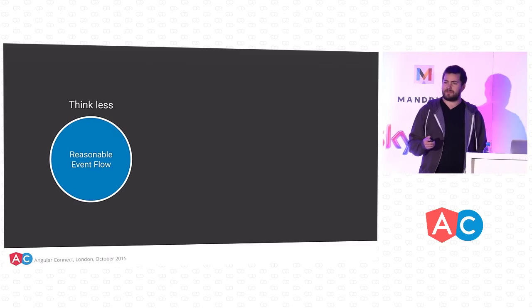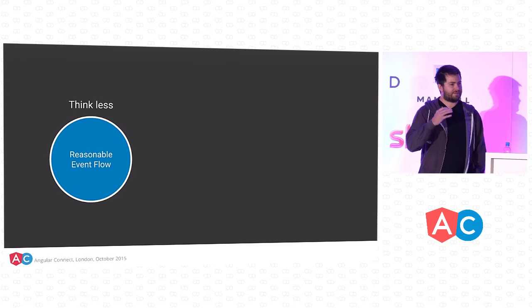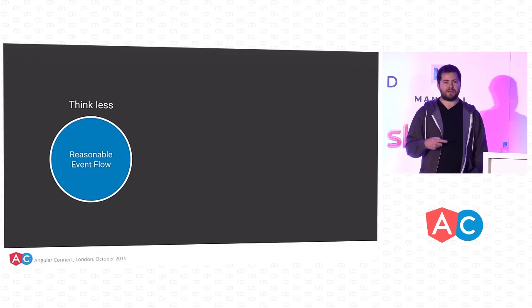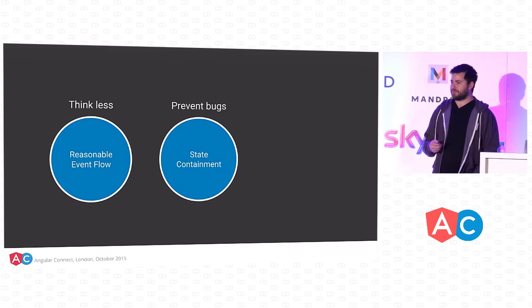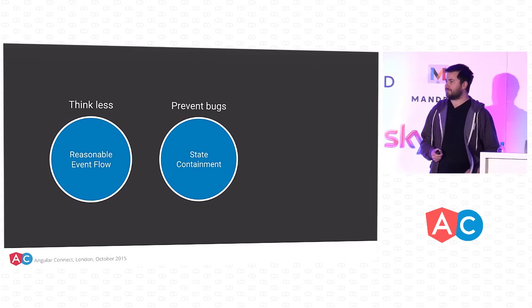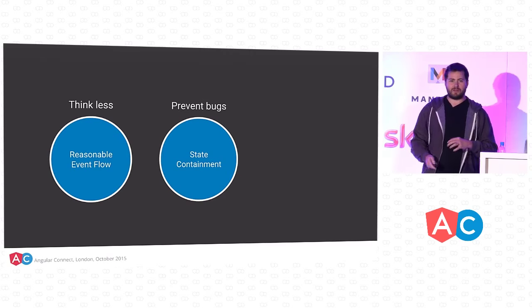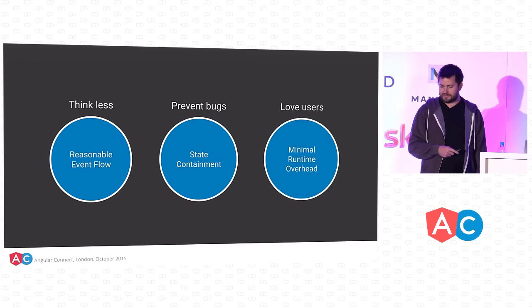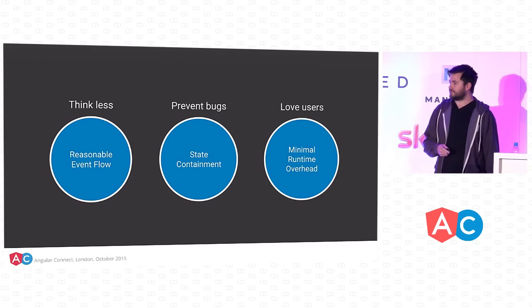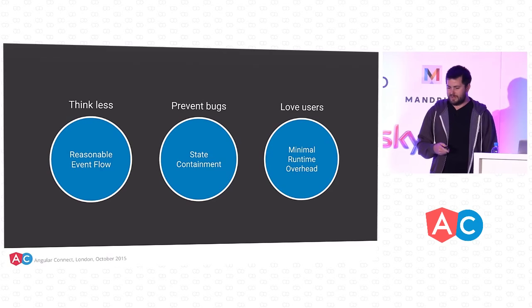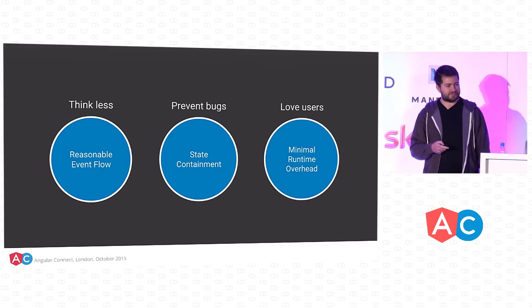Let's talk about some goals we have for making this work nicely. We want developers to think less — not have to look in many places to understand what's happening. We want to help prevent bugs and make apps more predictable by containing state better, keeping changes in one easy-to-see place as an event progresses. And we want to love our users — be good stewards of their device's network requests and processing power, doing as little work as possible.